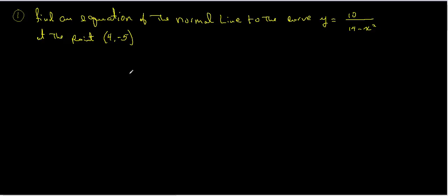During tutoring, somebody asked me the question: how do I find an equation of the normal line to the curve y equals 10 over 14 minus x squared, at the point (4, -5)? Well, the normal line is a line which is perpendicular to the tangent line at the given point.